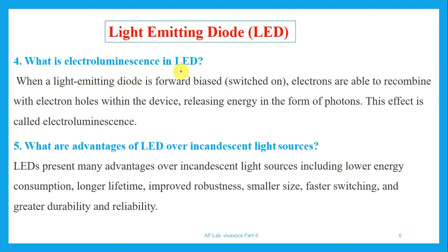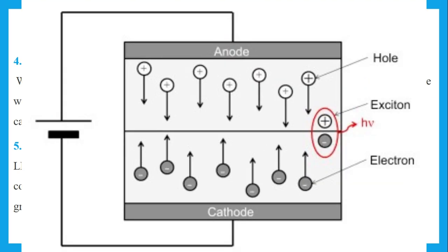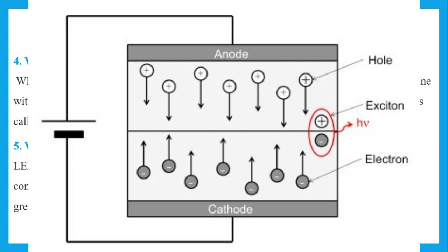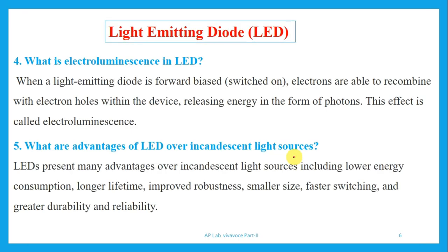When a light emitting diode is forward biased — meaning the positive terminal is connected to the positive terminal of the battery and the negative terminal to the negative terminal — electrons are able to recombine with electron holes within the device, releasing energy in the form of photons. This effect is called electroluminescence. What are the advantages of LED over incandescent light sources? LEDs consume lower energy, have a longer life, improved robustness, smaller size, faster switching, and greater durability and reliability.